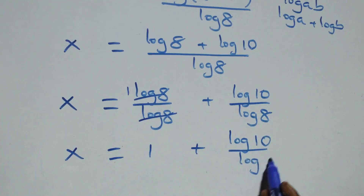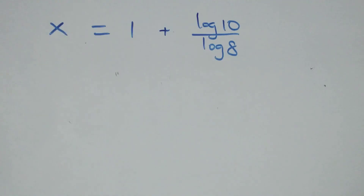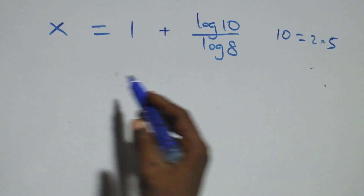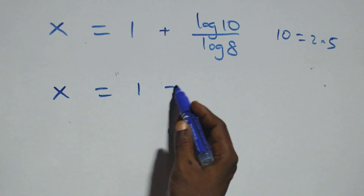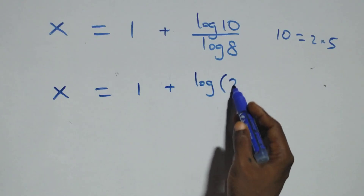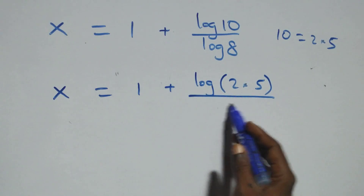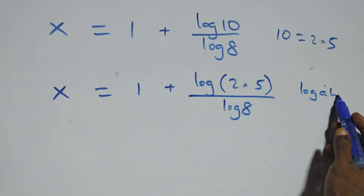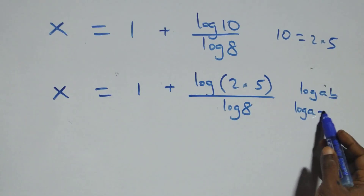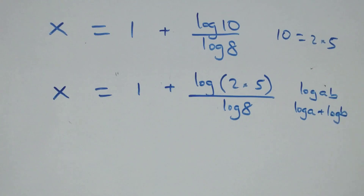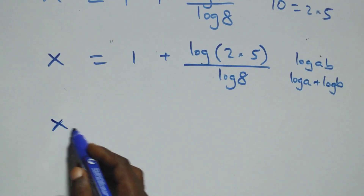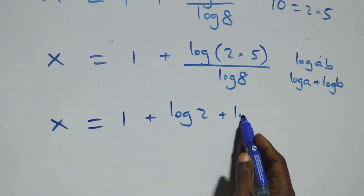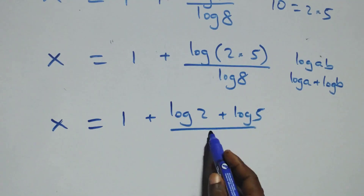Next, we can write 10 as 2 times 5. So x equals 1 plus log(2 times 5) over log 8, which is the same as log(2 times 5). This expands to x equals 1 plus (log 2 plus log 5) over log 8.